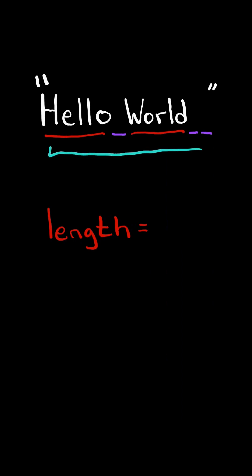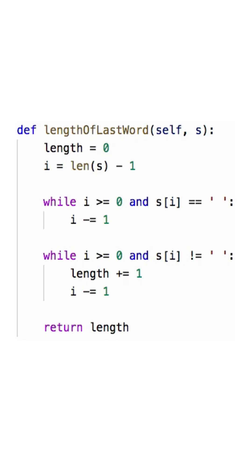A better approach would be to iterate backwards. We ignore the spaces. When we reach a character, we begin counting and we continue. When we reach a space or the end of the string, we return the length. And here is the code to do so.